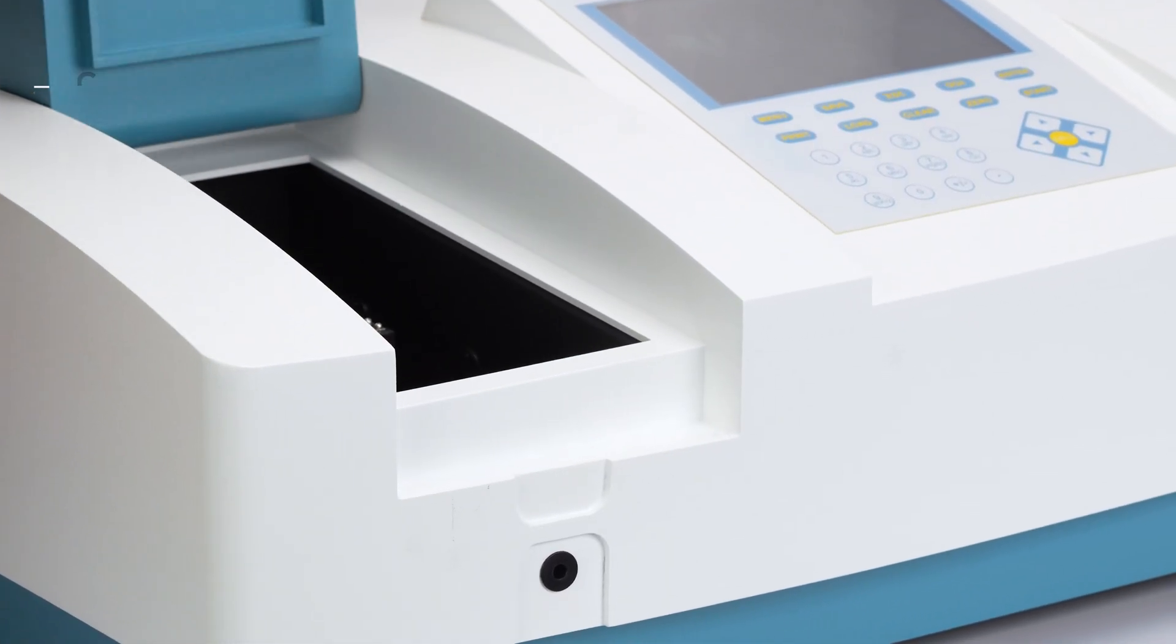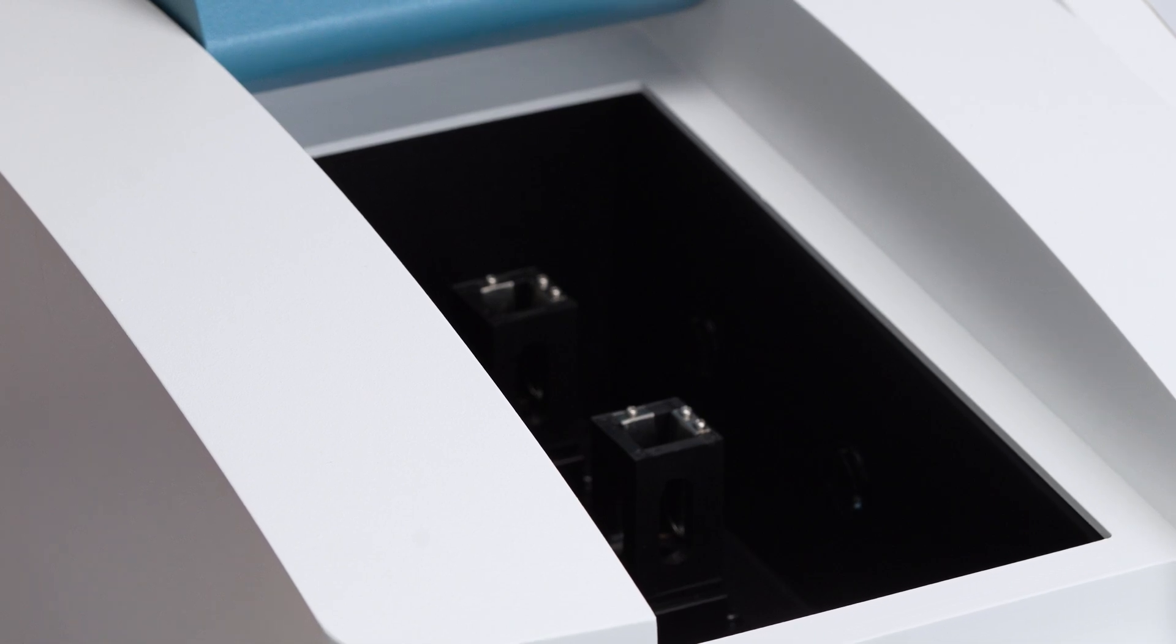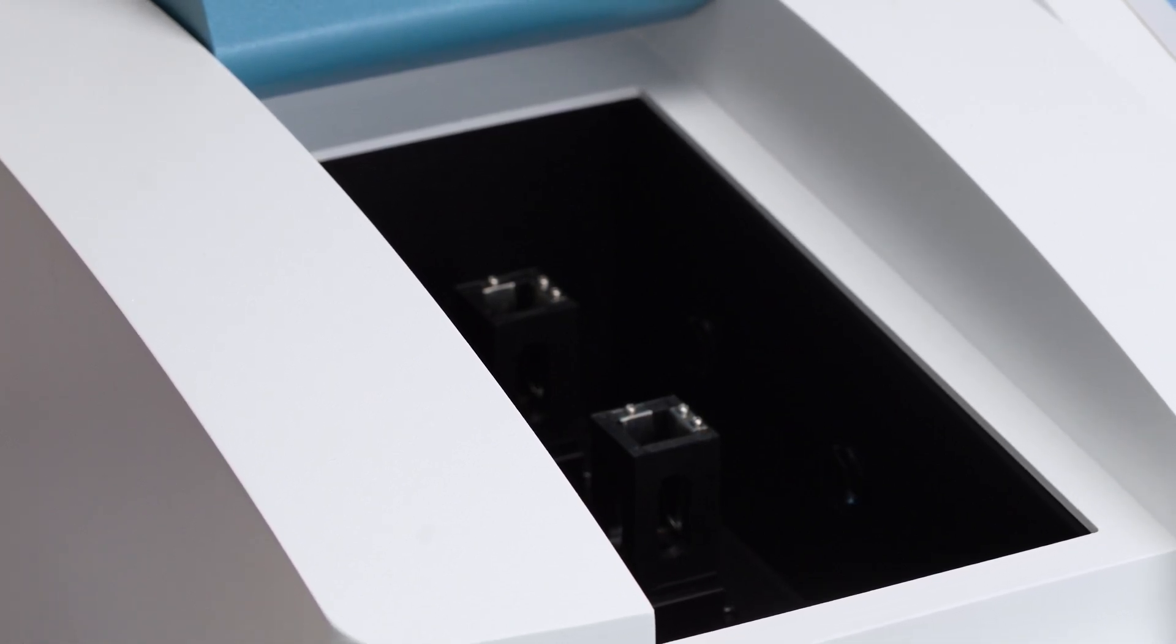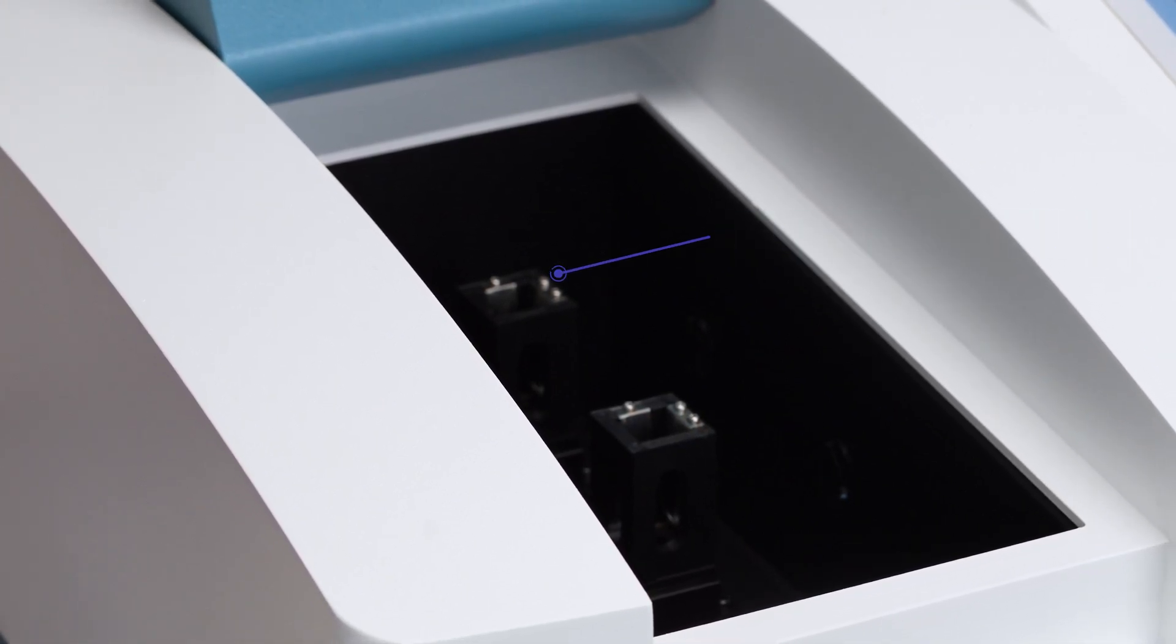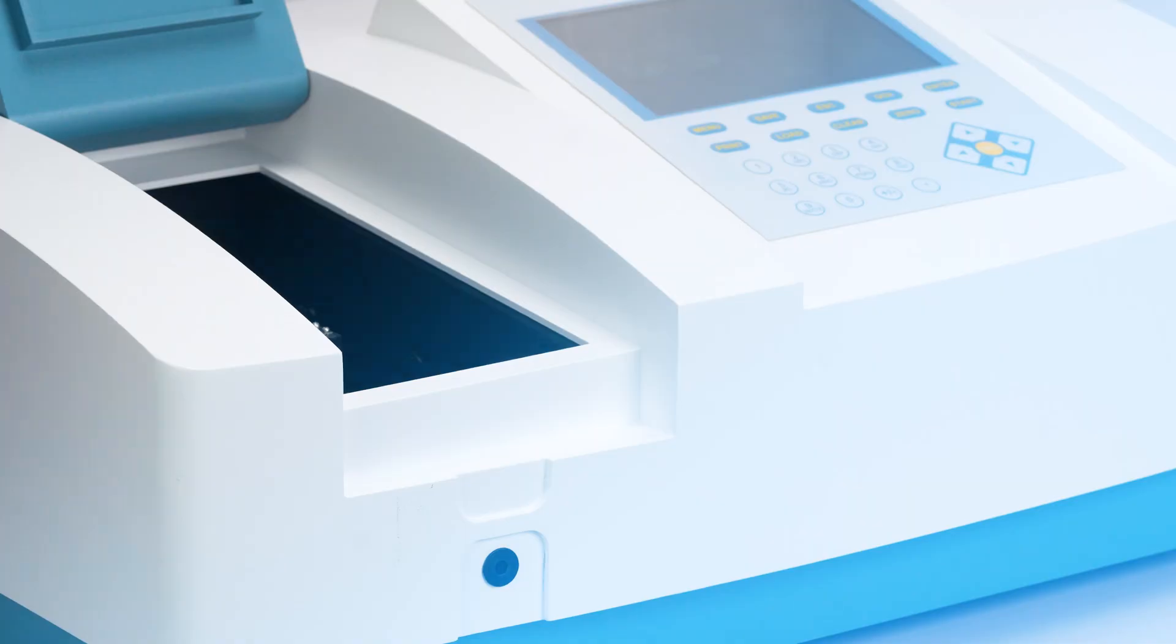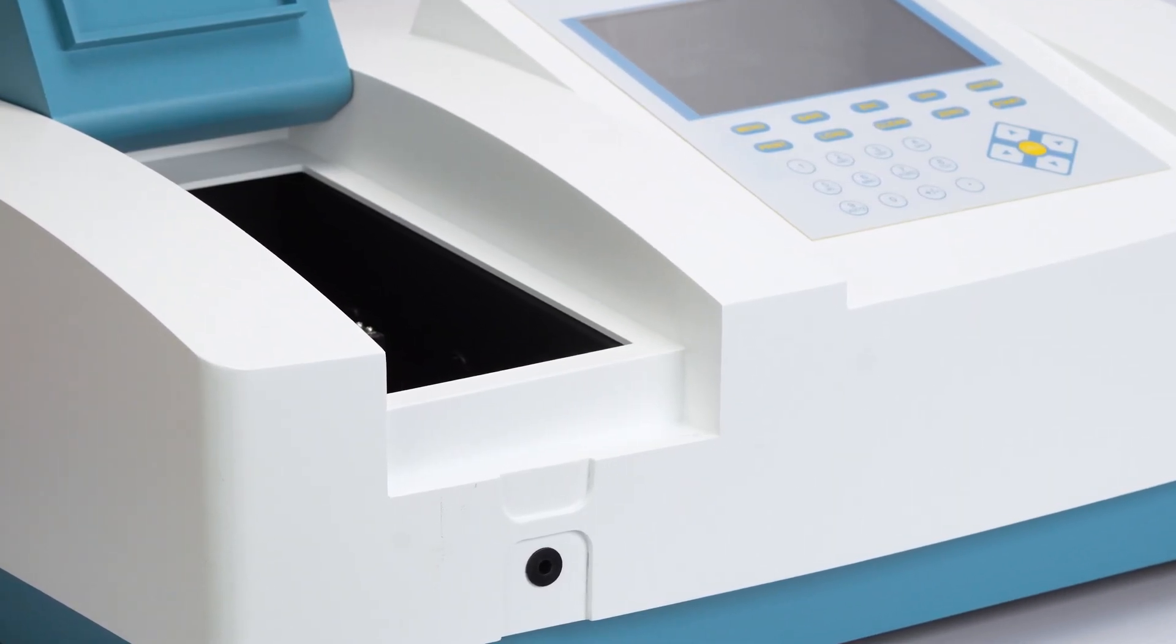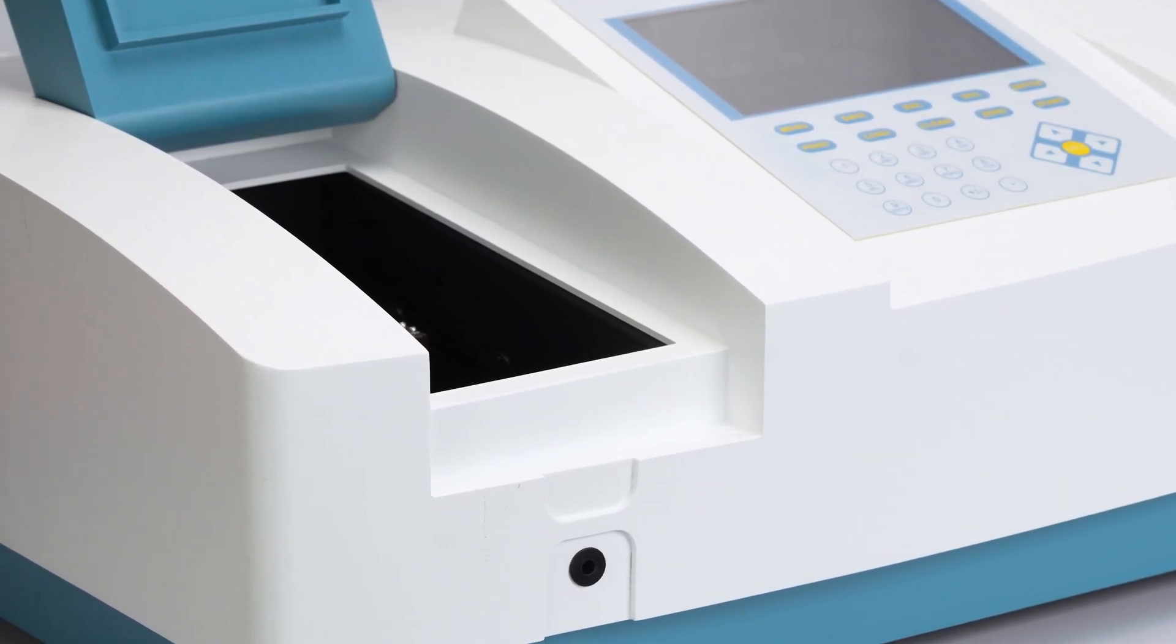The UV1950 compartment features two cell holders: the reference holder and the sample holder. These holders ensure accurate measurements by comparing sample readings against a reference.